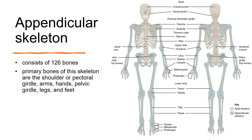The appendicular skeleton consists of the bones of the limbs, as well as the girdles that attach the limbs to the axial skeleton. The upper limbs consist of the arms, forearms, wrists, and hands, while the lower limbs consist of the thighs, legs, ankles, and feet. The girdles include the shoulder girdle, which attaches the arms to the axial skeleton, and the pelvic girdle, which attaches the legs to the axial skeleton.